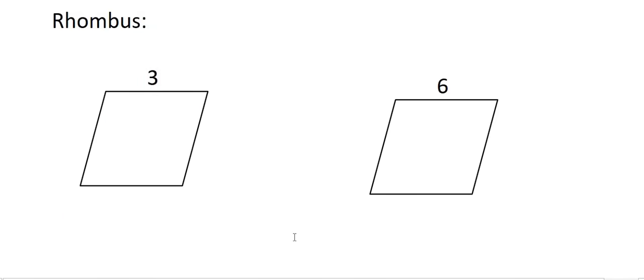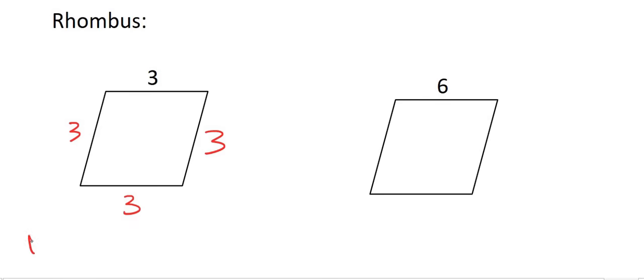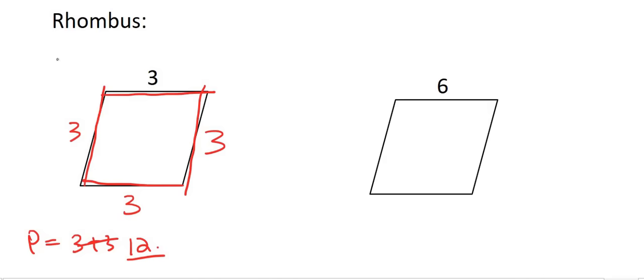Moving on to a rhombus, which is like a square that's been moved over to the side. Because it's the same as a square that's just been tilted, all of the lengths of a rhombus are the same. That's something important to know — write it down, put it on your wall. Rectangles and squares are easy, but as we start getting to a rhombus it starts getting a little more difficult to remember. To work out the perimeter, that's very easy: three plus three plus three plus three, or three times four, which gives us 12. It's just the distance on the outside.